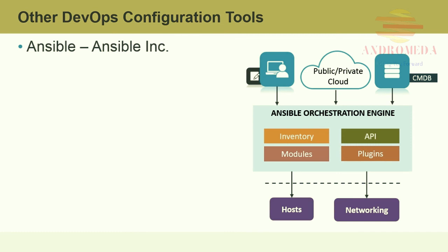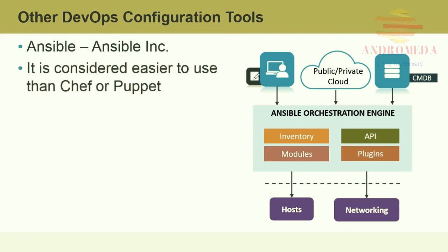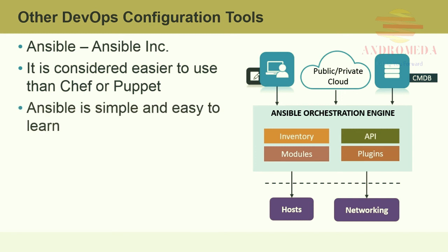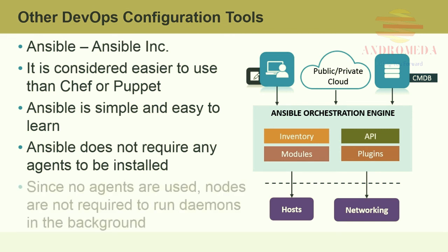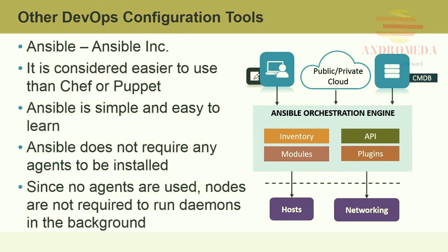Ansible by Ansible Incorporated is a Python-based configuration management tool. It is open-source and available for free under the GNU General Public License, and is considered easier to implement than Chef or Puppet. It's included in the Fedora distribution of Linux and is also available for Scientific Linux, CentOS, Red Hat Enterprise Linux, and other operating systems. Ansible is simple and easy to learn. What distinguishes Ansible from Puppet and Chef is that Ansible does not require any agents to be installed — nodes are not required to run daemons in the background, which reduces overhead and increases performance.